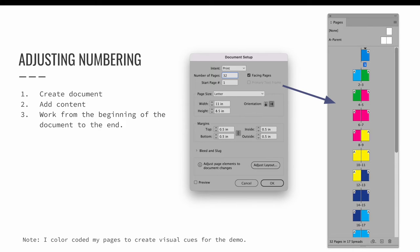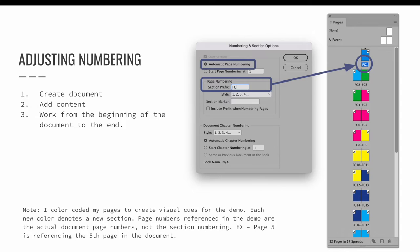Starting at the beginning of my document, I selected the first page of each section. Page one starts the first section, which is my front cover and the inside front cover. I launched the Numbering and Sections dialog to make decisions about this section. I don't have to create the section because it already exists, but I may want to change the settings. The only thing I need to do is give my section a prefix. I am doing this because I know later on I am going to start numbering from page one, which will technically start on the document's fifth page. You can't have two page ones in the same document, so by adding a prefix, I can have a section A page one, a section B page one, and so on.